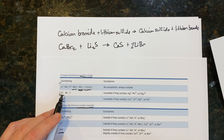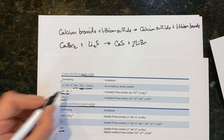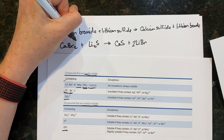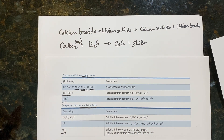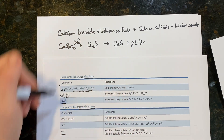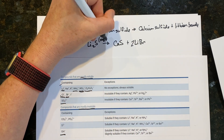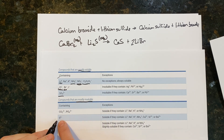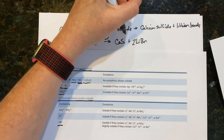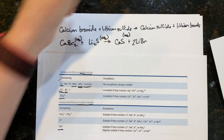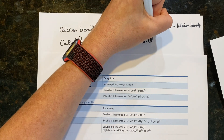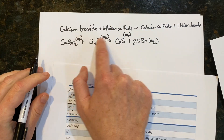Now let's determine the states. Calcium bromide: bromide is mostly soluble unless it contains silver or mercury(I) — calcium is not one of those, so it's aqueous. Lithium has no exceptions — always soluble, so Li₂S is aqueous. Calcium sulfide: sulfide is usually insoluble, but it is soluble when it contains calcium — therefore CaS is aqueous. Lithium bromide: lithium is always soluble — aqueous.